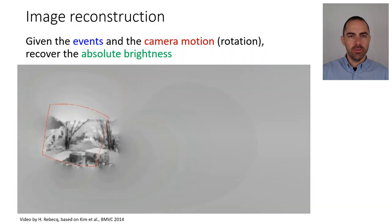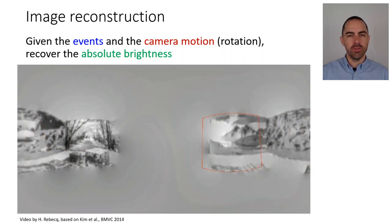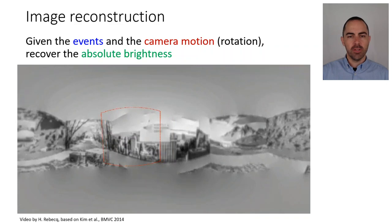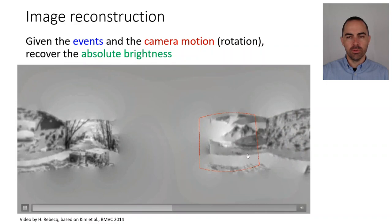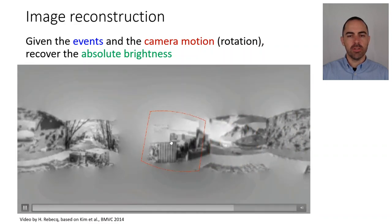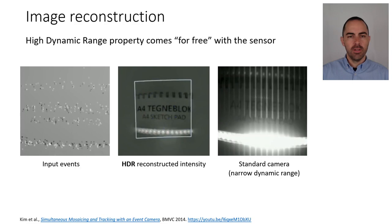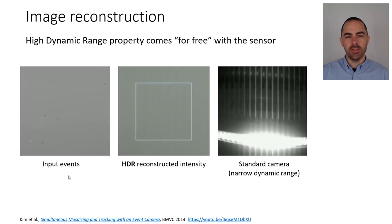So what we want is the following: given the events and the camera motion — in this case we assume a purely rotating camera — we would like to recover the absolute brightness, as represented in this video. As the camera moves and we know the motion, we want to obtain a panoramic image like this one reconstructed from the events.